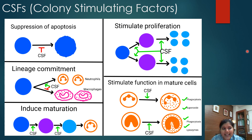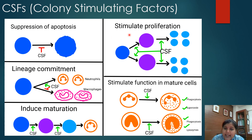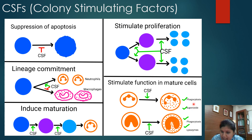The next important cytokine is colony stimulating factors. Colony stimulating factors have various functions in the hematopoietic lineages: they suppress apoptosis of hematopoietic cells, help in lineage commitment — a particular CSF will stimulate one lineage and inhibit another — induce maturation of a hematopoietic stem cell to a final cell, stimulate proliferation of hematopoietic lineages, and stimulate function in mature cells. For example, in neutrophils it stimulates phagocytosis and superoxide production; in monocytes it stimulates phagocytosis and lysozyme production.